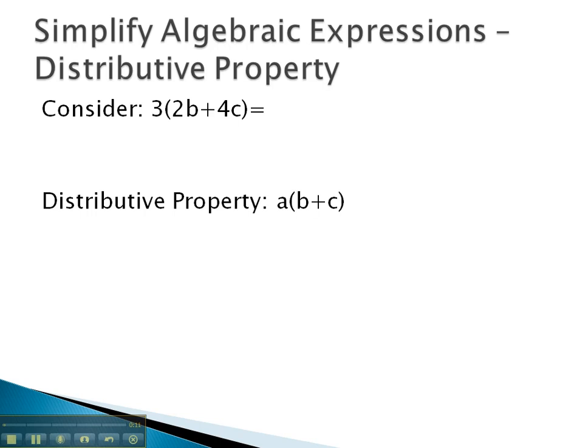To set it up, let's consider the expression 3 times 2b plus 4c in parentheses. Multiplying by 3 means we're adding this thing 3 times over and over again. In other words, we have 2b plus 4c once, added to 2b plus 4c twice, added to 2b plus 4c three times. We've added it three times. That's what multiplying by 3 means.